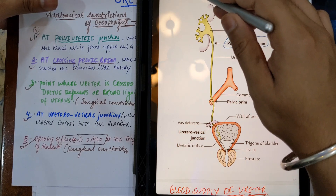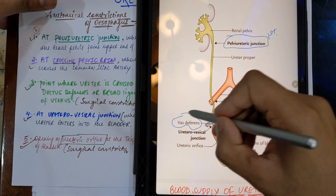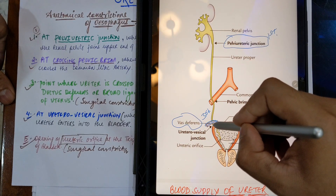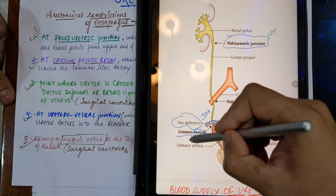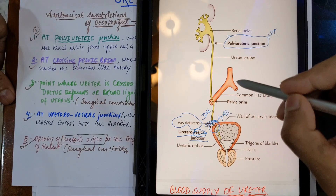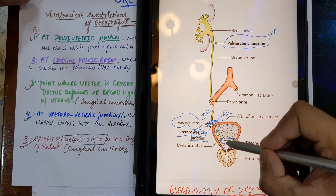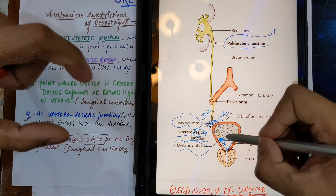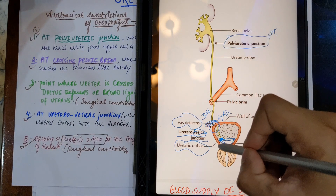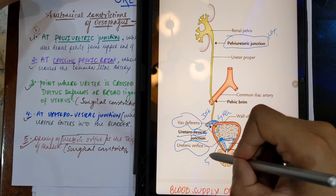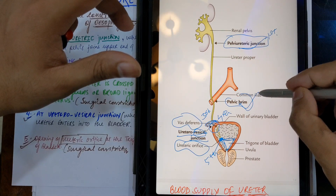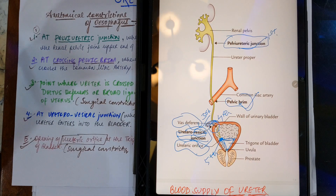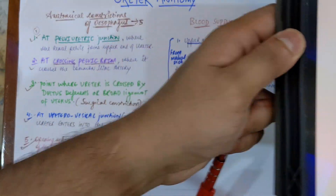The third constriction — you can see in the diagram where the ductus deferens is crossing over the ureter, and in females this corresponds to the broad ligament. The fourth constriction is at the ureter-vesicle junction — you can see the ureter entering the bladder; 'vesicle' is the term used for bladder. The fifth constriction is at the opening of the ureteric orifice in the trigone of the bladder, where the ureter opens.